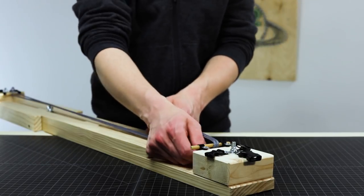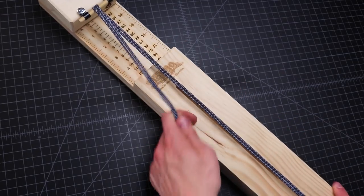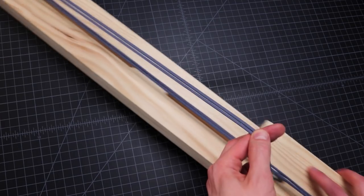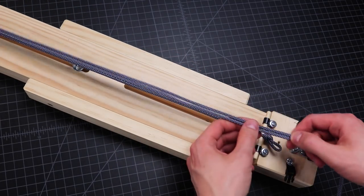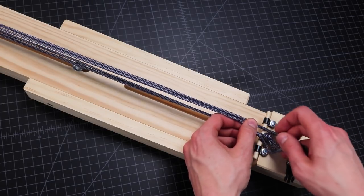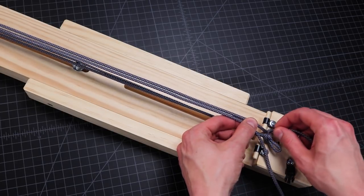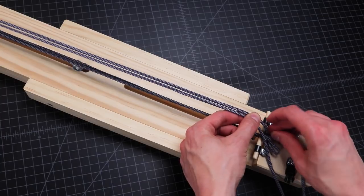Make sure those two center cords are not twisted around each other. And then we're going to be going back to the other end of the jig. And we'll go down through the top this time. Each cord to the side of that center knot.